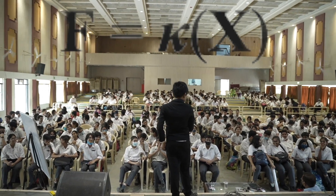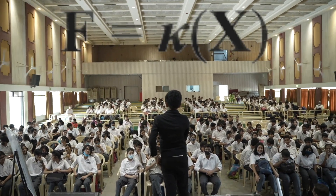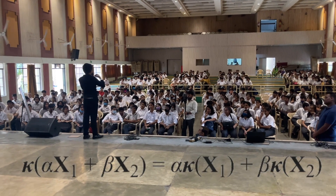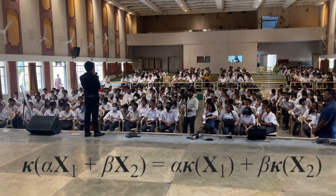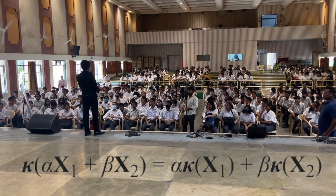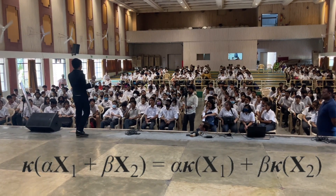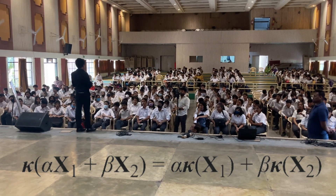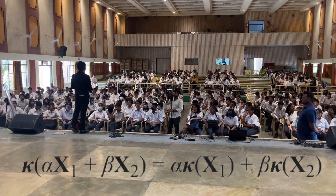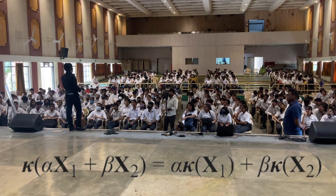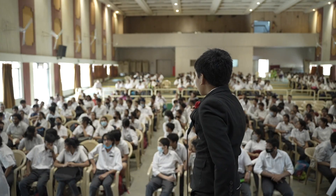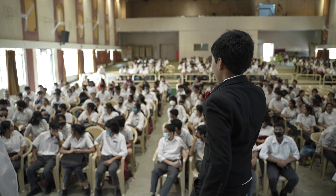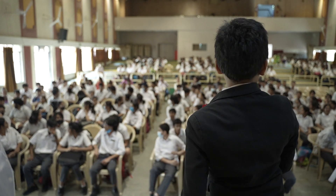where X is a displacement vector, and this can be rewritten as K of alpha X1 when the displacement vector is in one direction, plus beta X2 when the displacement vector is in a second direction, and where alpha and beta are random constants.